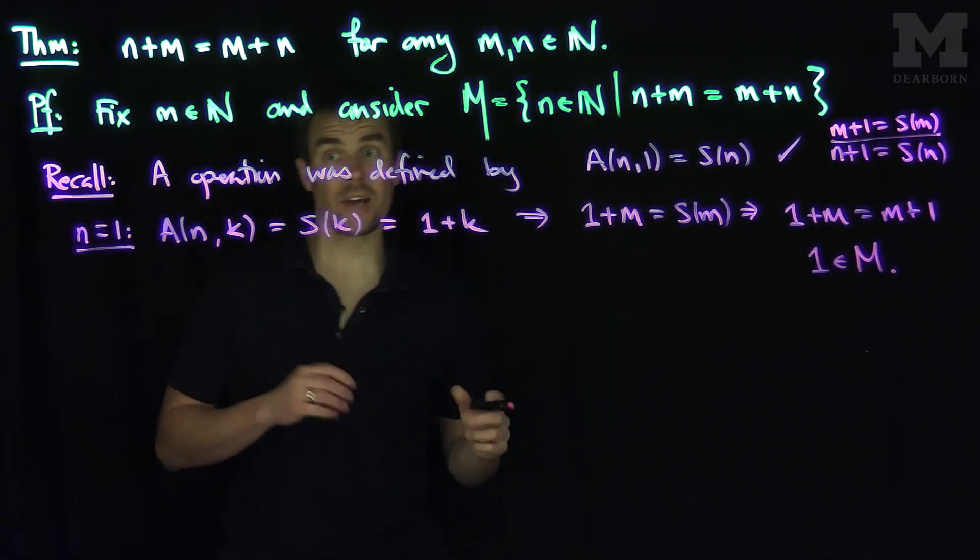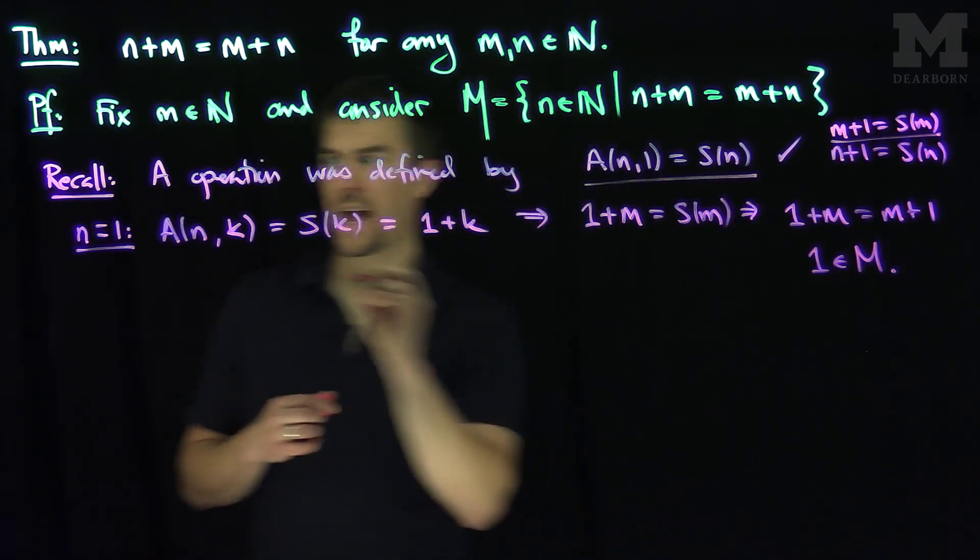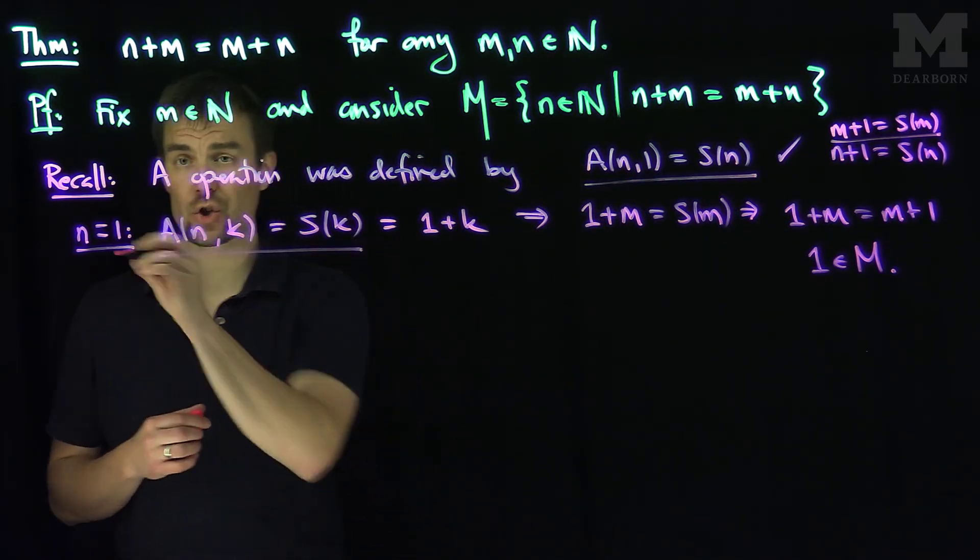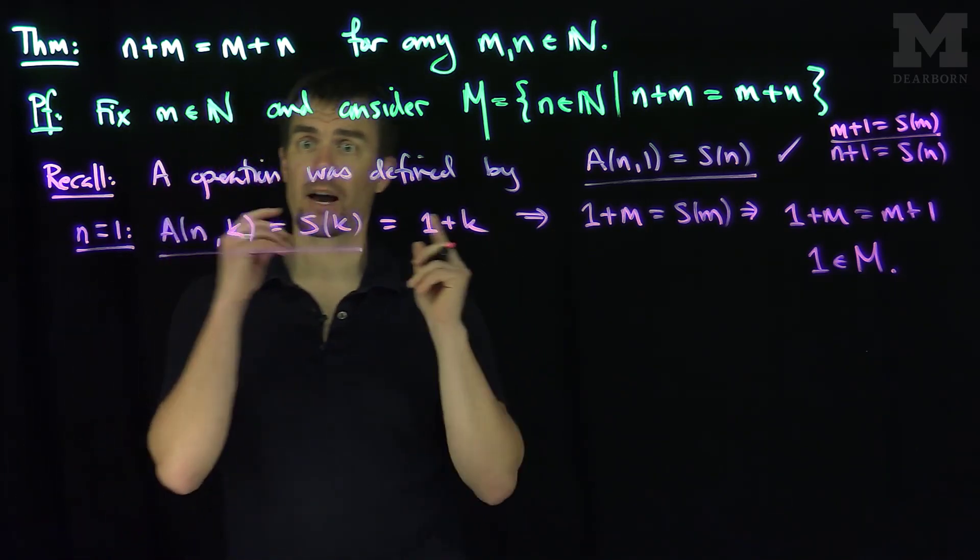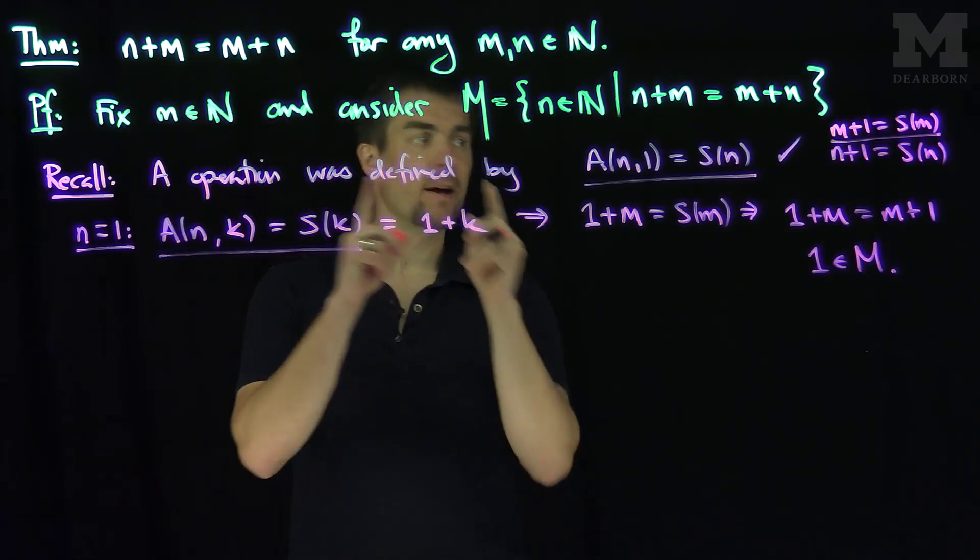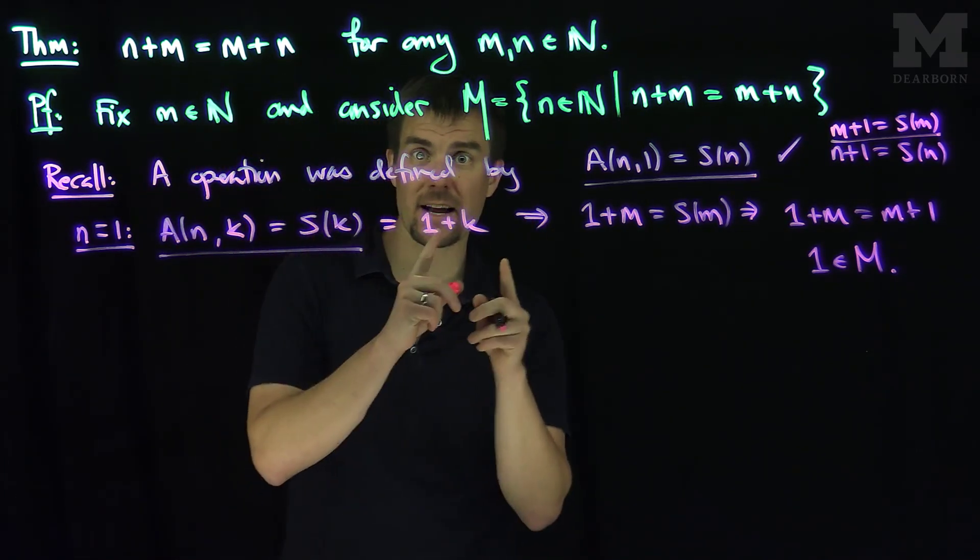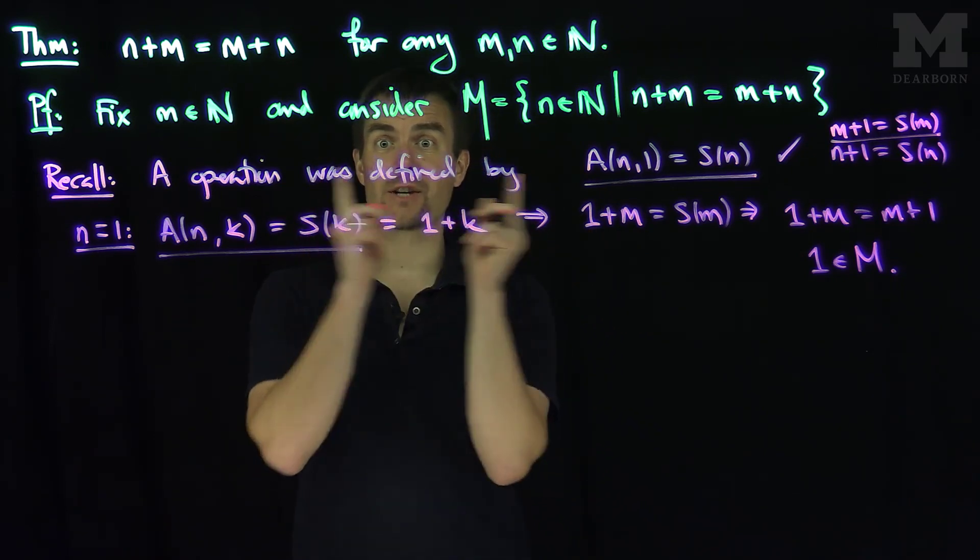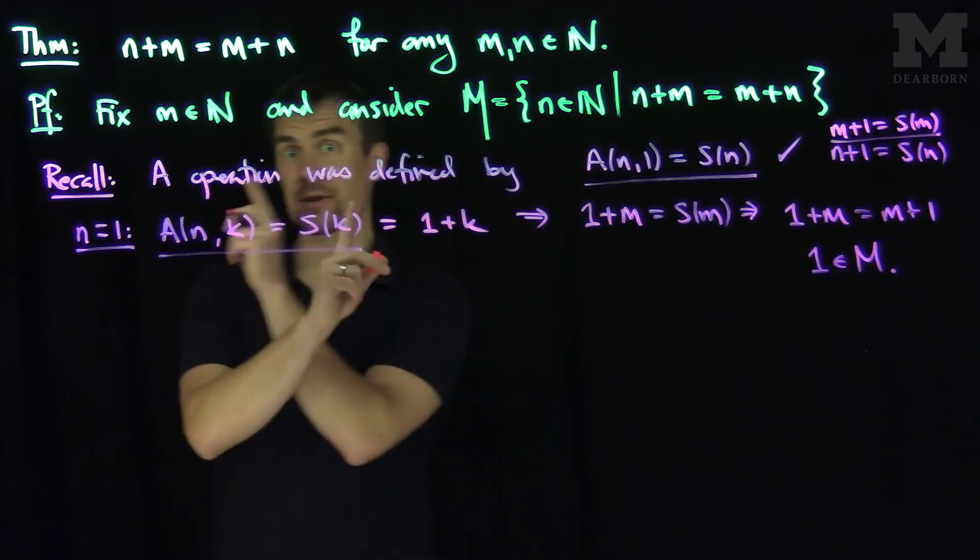So 1 is in the set M. So again, we need to use the property of addition and the defining definition of addition when n equals 1 to establish that 1 is in this set. So 1 plus any natural number is that natural number plus 1.